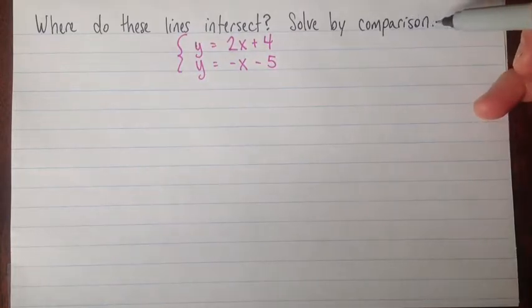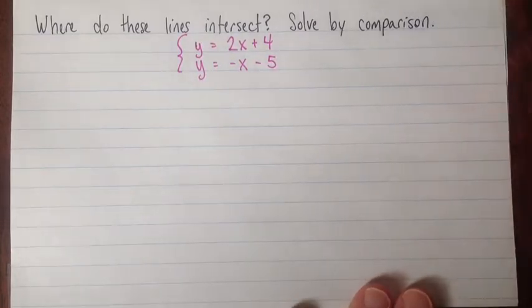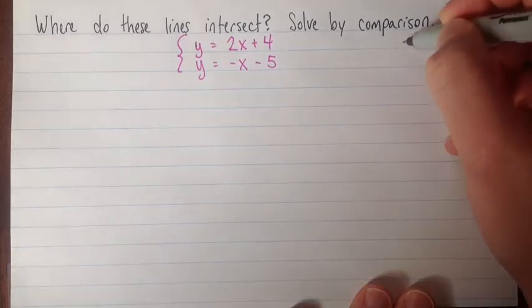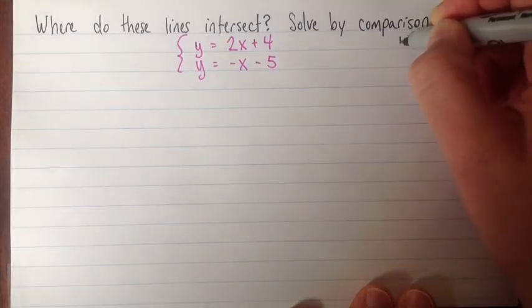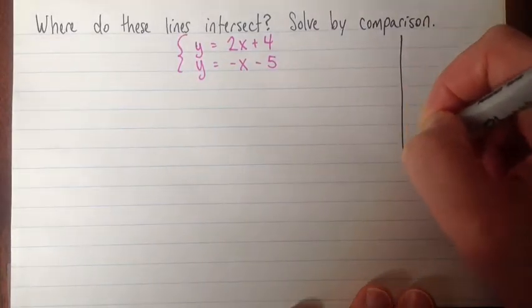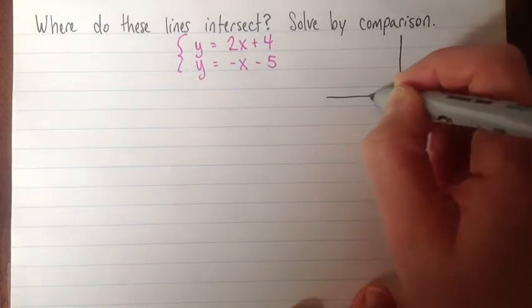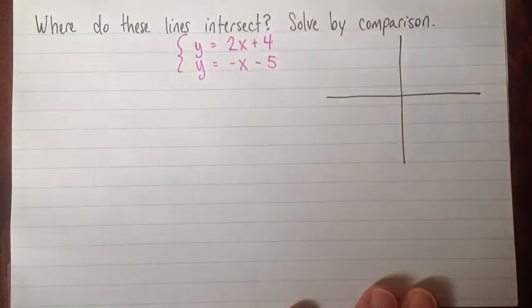So solving by comparison is an algebraic method, but before I start, I'm going to draw a sketch to get some idea. Because it's easy to make little algebraic calculation mistakes. And if we have a sketch, it reduces the chance that we'll make those mistakes, and it increases the chance that we'll catch them quickly if we do.